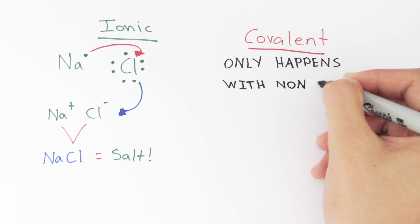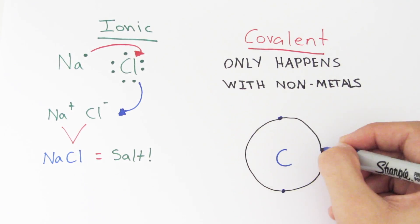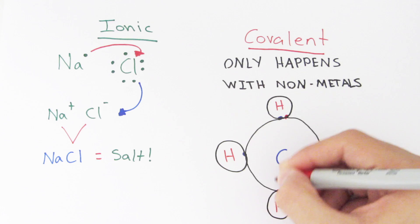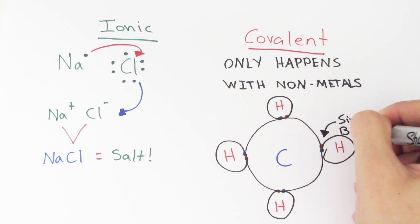Covalent bonding only happens with non-metals. Say we had a carbon atom with four valence electrons. It needs another four to complete its energy level. So along comes hydrogen to do just that and form methane, the simplest of the hydrocarbons.